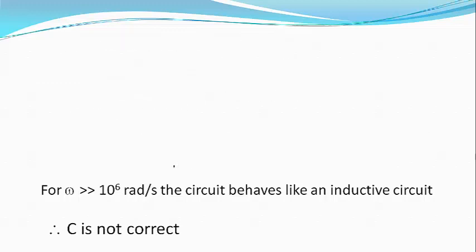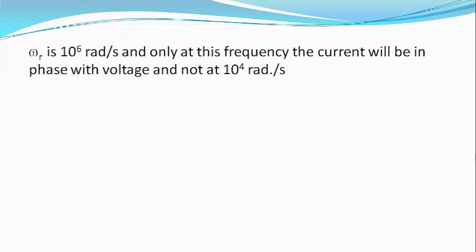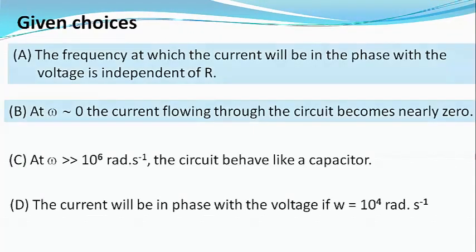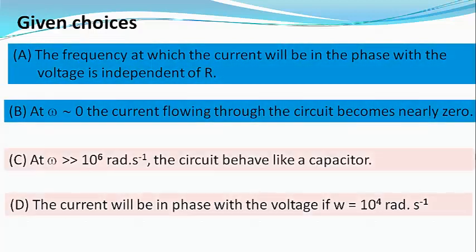As have already been calculated that omega r equals 1 by root of LC which equals 10 raised to power 6 radians per second and only at this frequency, the current will be in phase with the voltage. And not at omega equals 10 raised to power 4 radians per second and hence option D is also wrong. In nutshell, options A and B are correct and options C and D are not correct.